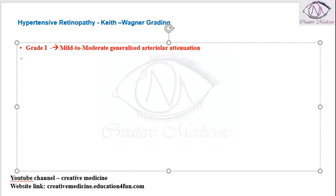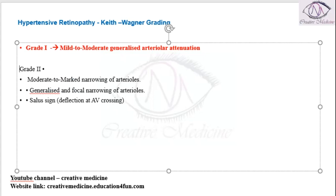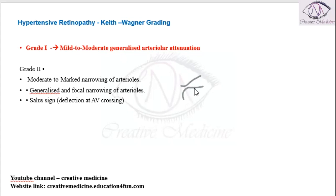In Grade 2, there is moderate to severe narrowing of arterioles, seen along with generalized or focal narrowing. There is also the Salus sign seen in Grade 2.